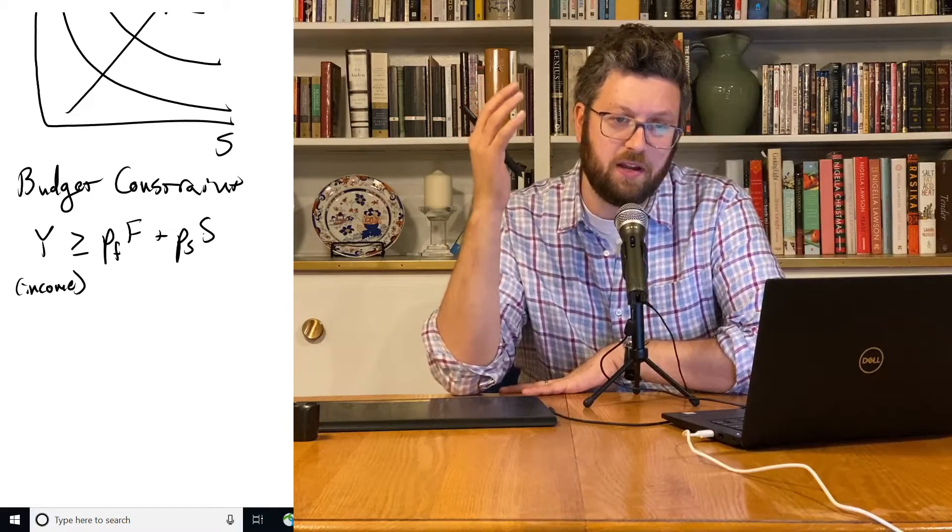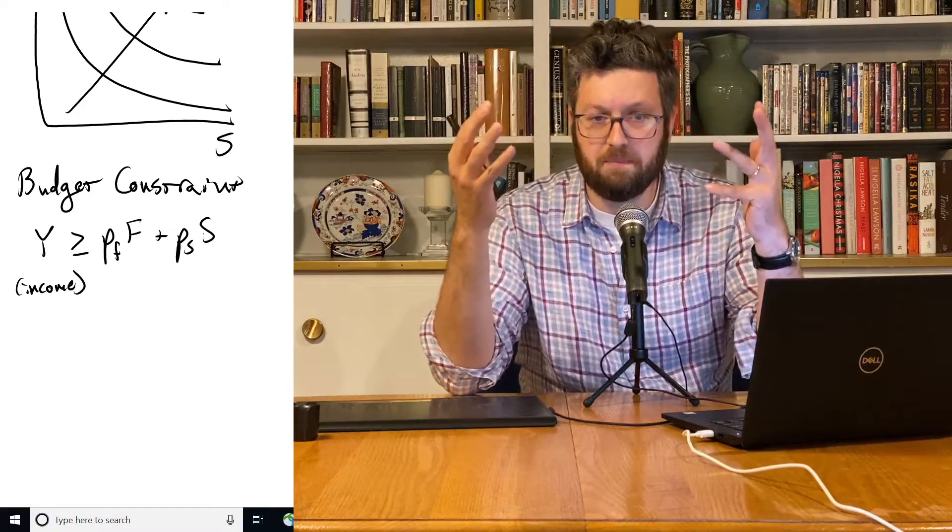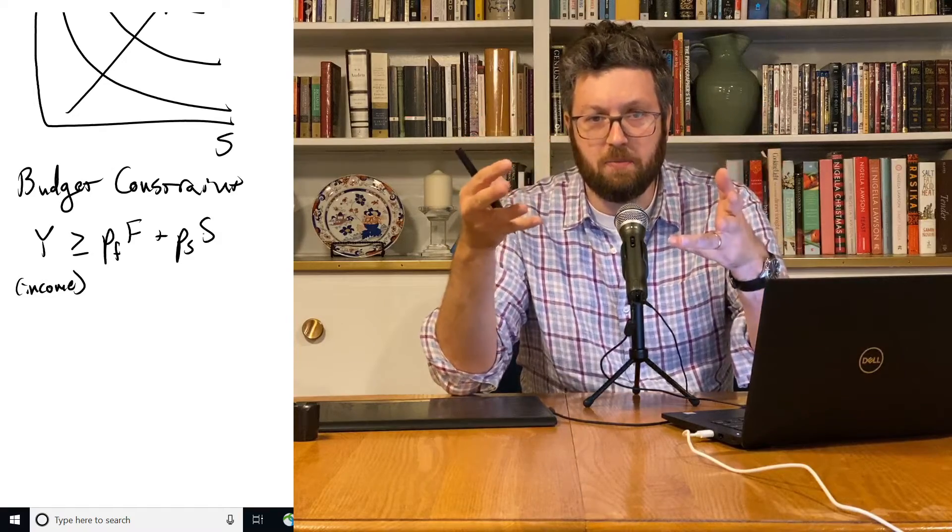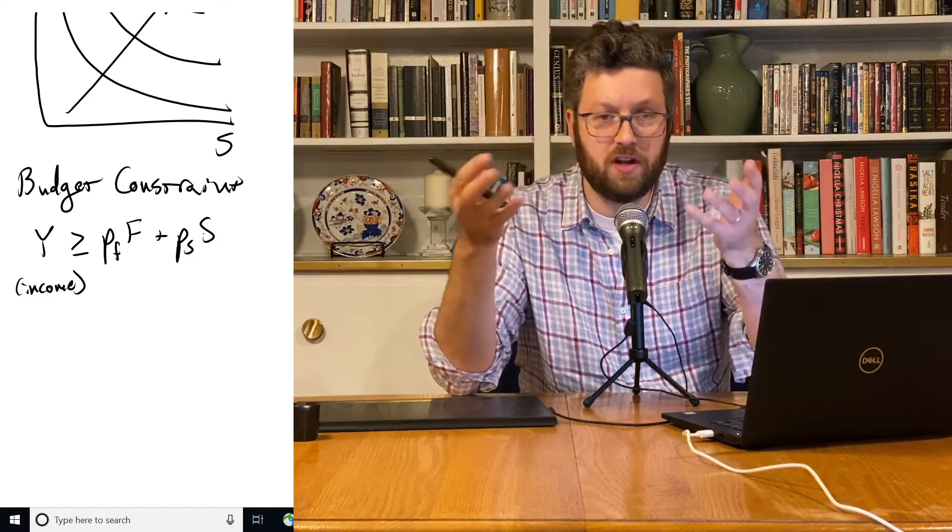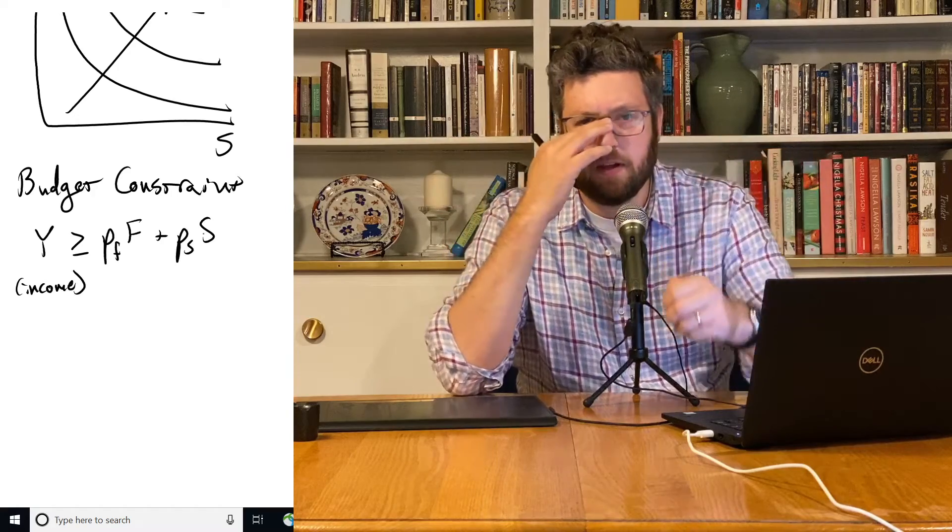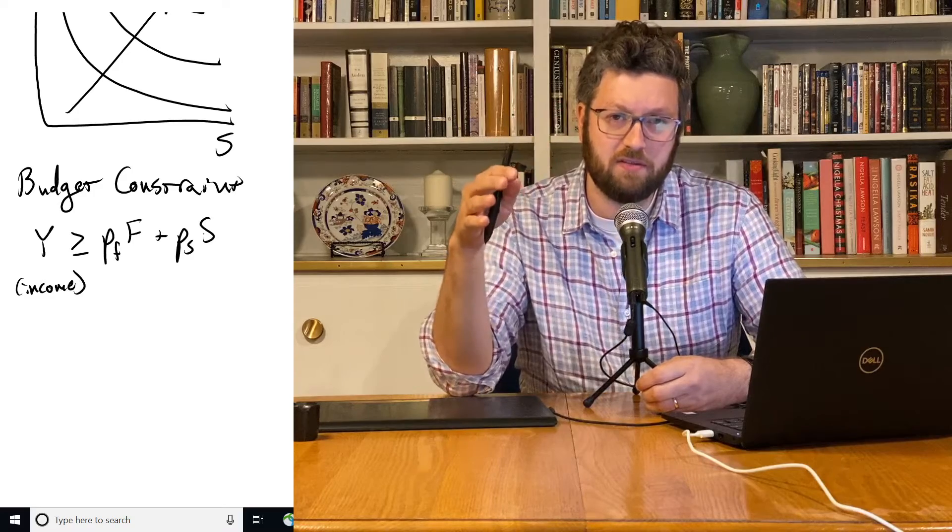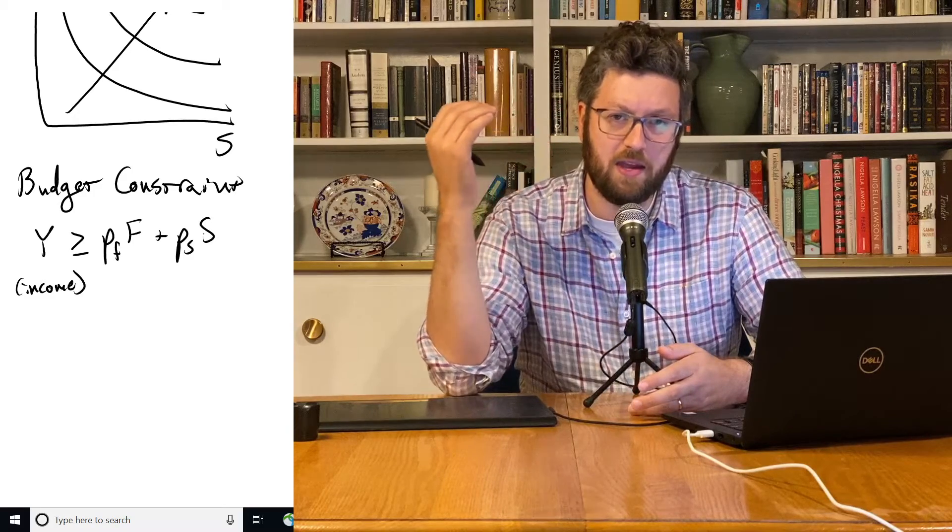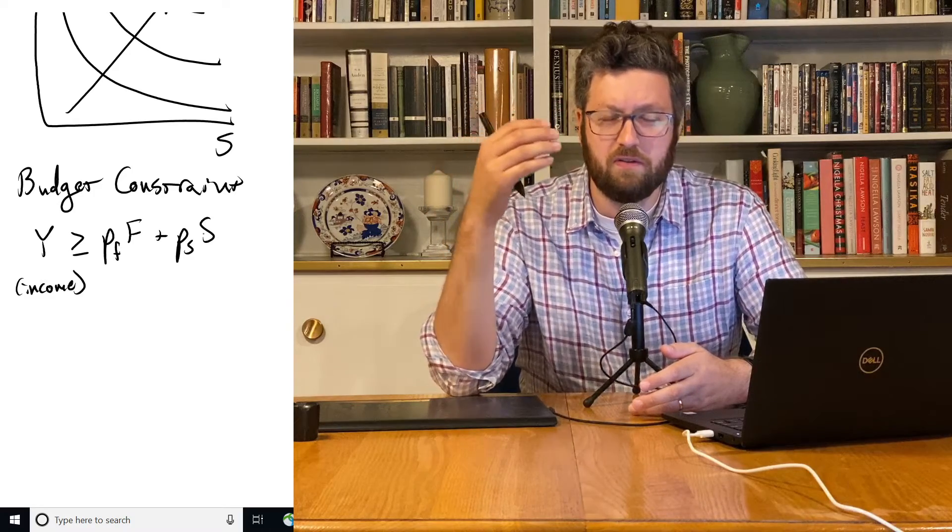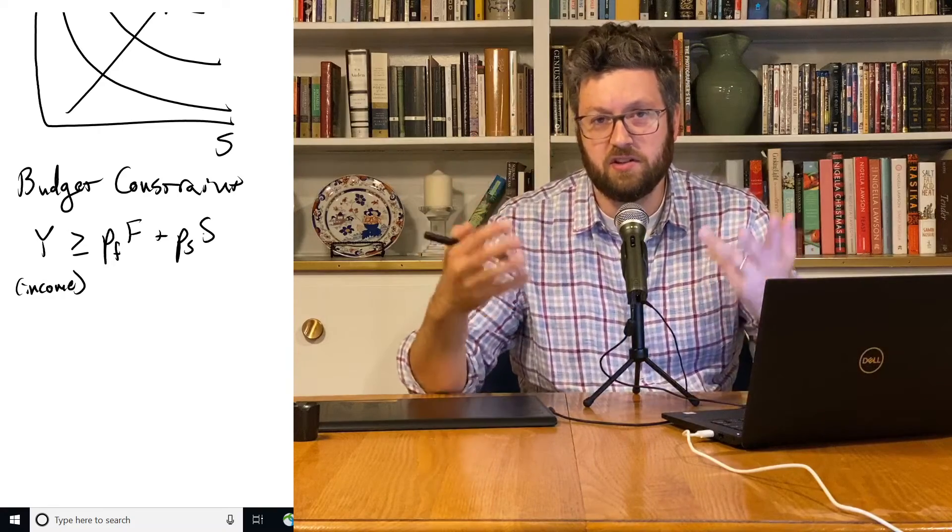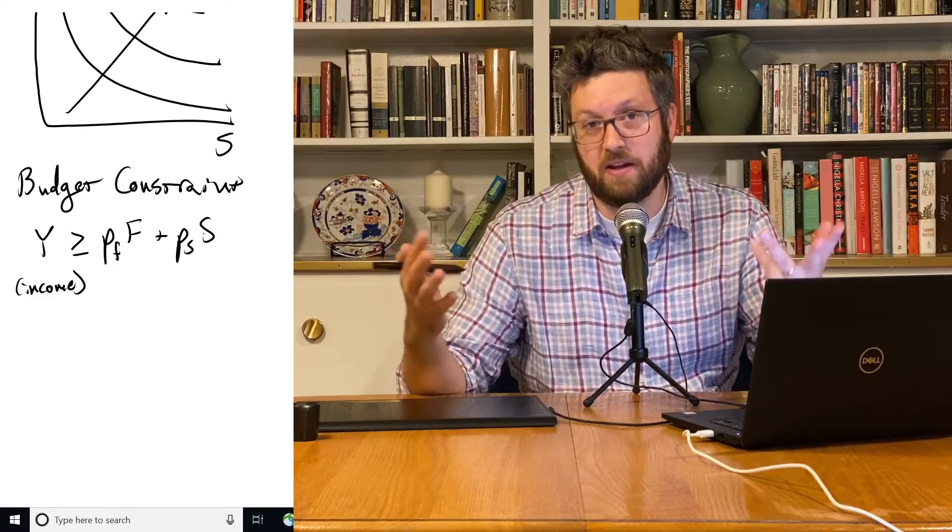And in a market, the most you can possibly buy is if you spend all your money. So the amount you spend on food and shelter has to be less than your income. So in the next video, we'll talk about how we can graph this kind of relationship and use that to figure out some conditions on how consumers are going to spend their money in a market economy.